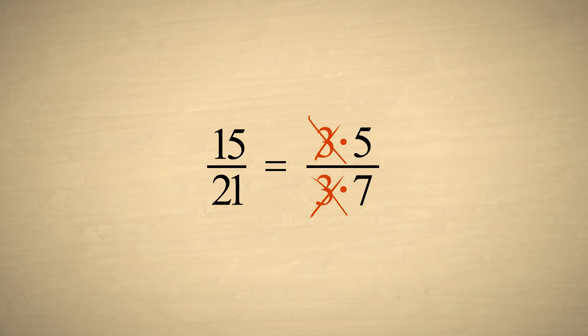In other words, we cancel out a factor of three in the numerator and denominator. This reduces the fraction to five-sevenths.